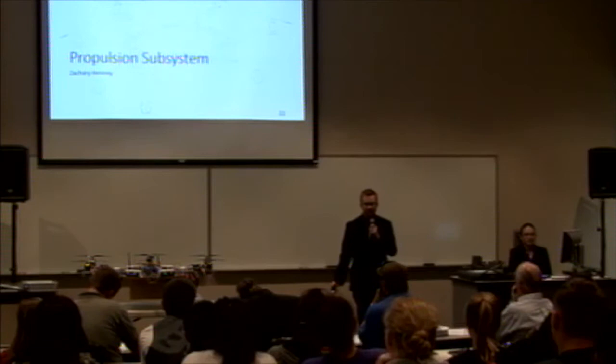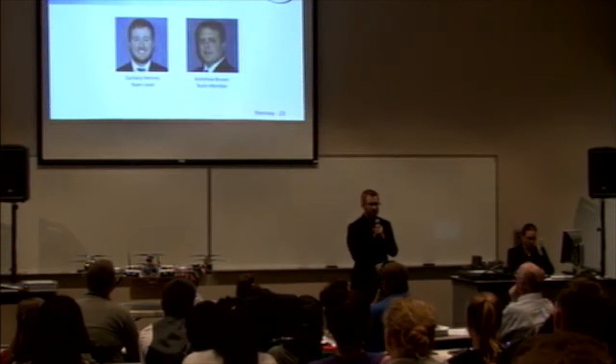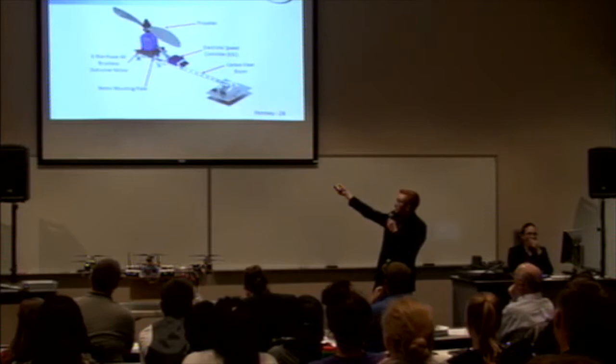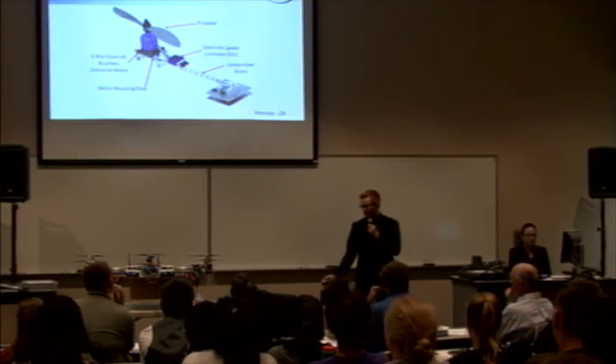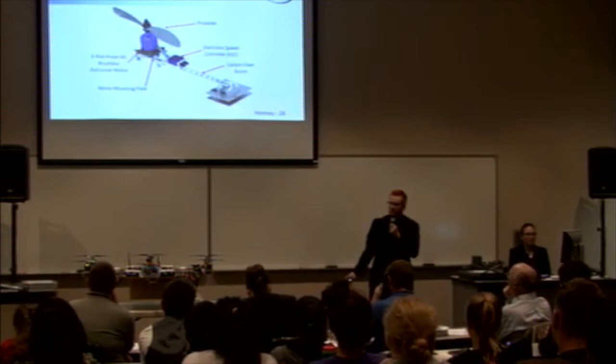Thank you, Kevin. My name is Zachary Henning, and I am the team lead for the propulsion subsystem. Presenting alongside me today is my fellow team member Matthew Grapp. I will be discussing the requirements, metrics, and analysis methods we used to validate our requirements; Matthew will be discussing our experimental and numerical outcomes. I would like to introduce you to the components of the propulsion subsystem: the carbon fiber propeller, which is a 15-inch blade diameter with a pitch of 7.5 inches, hooked up to the E-Flight Power 60 Brushless Outrunner motor, controlled by the Phoenix Edge electronic speed controller, or ESC.